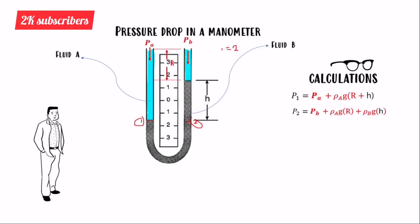For pressure at point two, we have two different fluids to account for. We write: P2 = PB + ρA·g·R (for the fluid A column of height R), plus ρB·g·H (for the mercury column of height H).